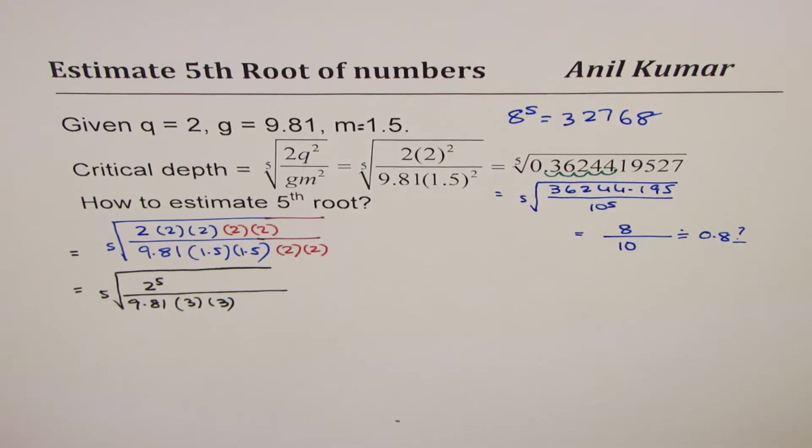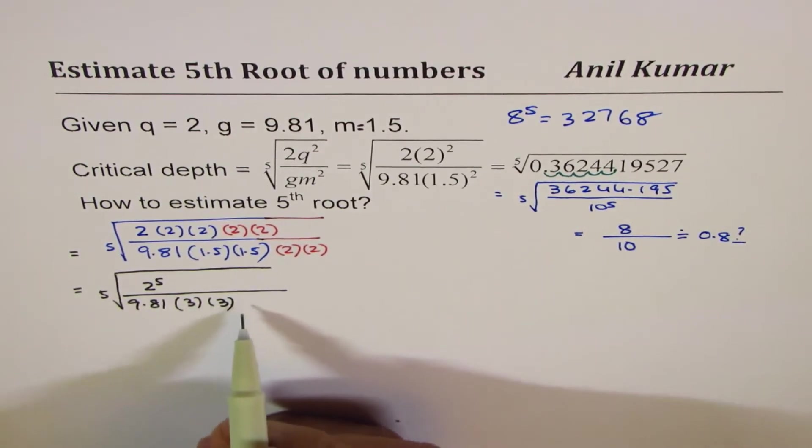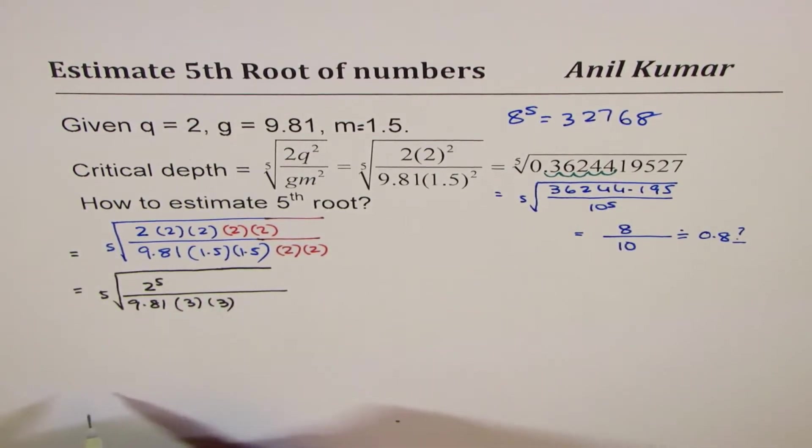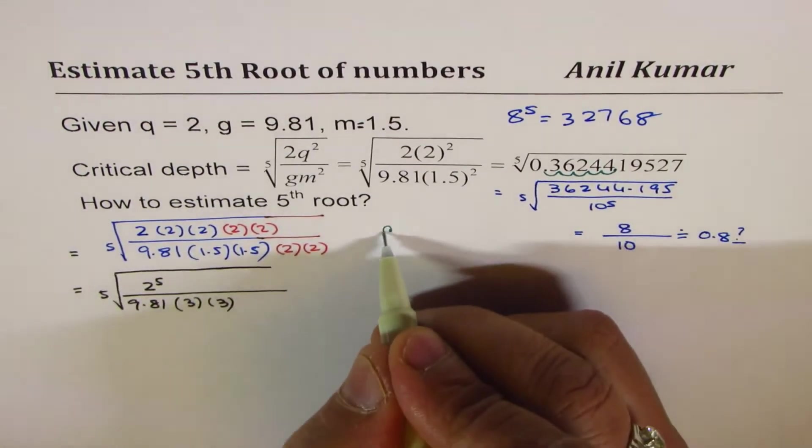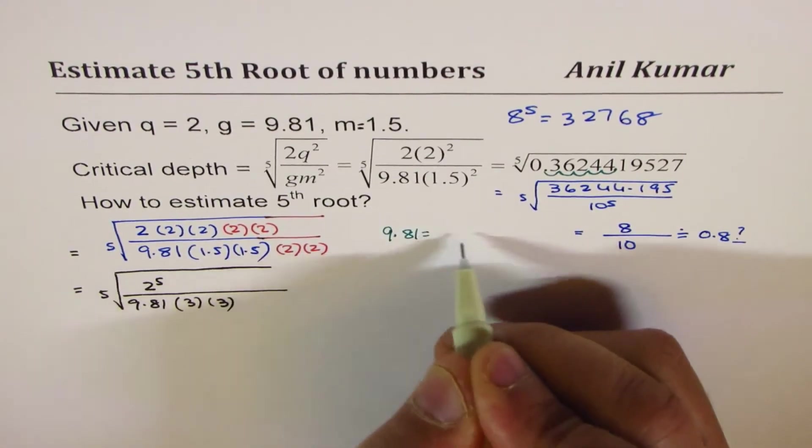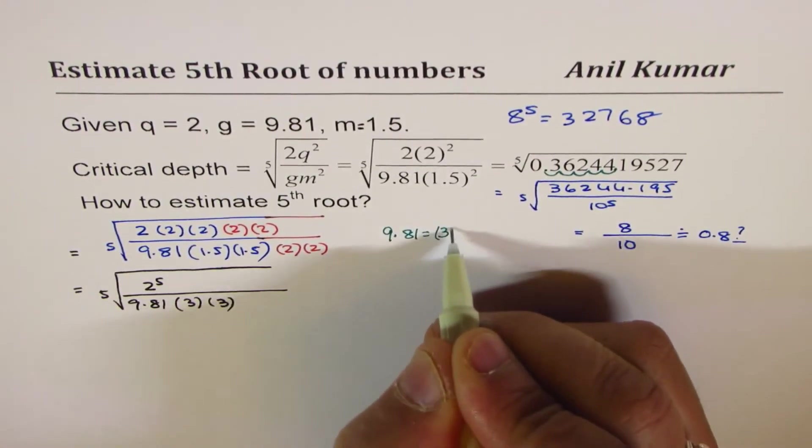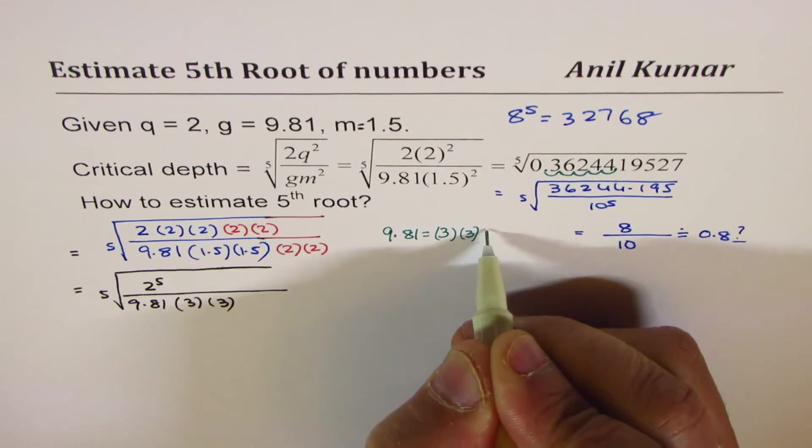In the denominator I get 9.81 times, if I multiply, I get threes. Now we could again multiply by threes to get five threes. The other estimate which we can do is that we can say 9.81 equals 3 times 3 times some error e.